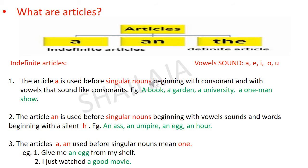What are articles? Articles are 'a', 'an', and 'the'. 'A' and 'an' are indefinite articles. 'The' is called the definite article.